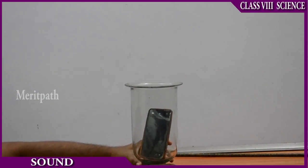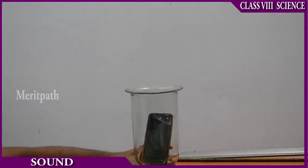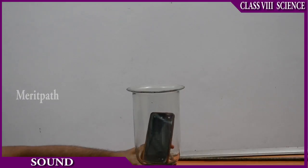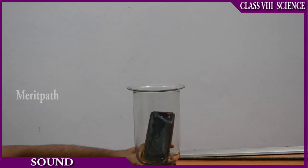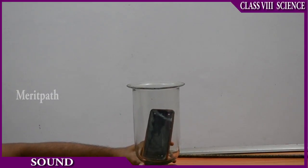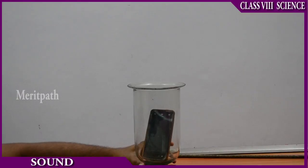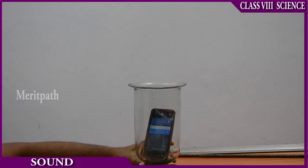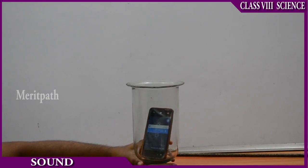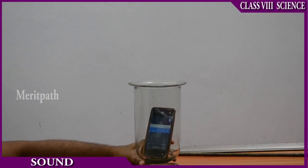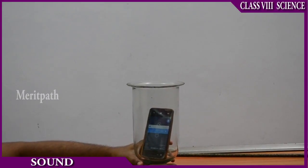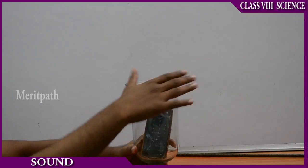Let us do a practical experiment to understand that a medium is required for sound. We have taken a metal or glass tumbler. We make sure the tumbler is dry, and now I am placing a cell phone inside the tumbler. I am asking my friend to give a ring on this phone. If you observe, there will be a ring on the phone which you can hear. Now I will ask my friend to put his hands on the tumbler and then ring again to observe the difference.